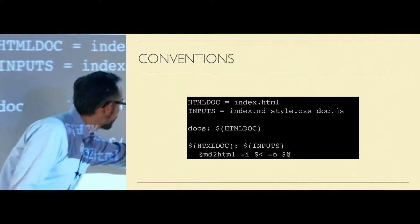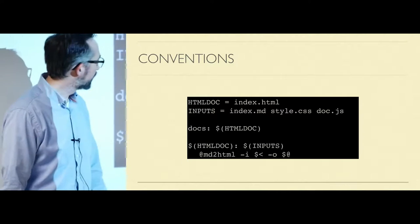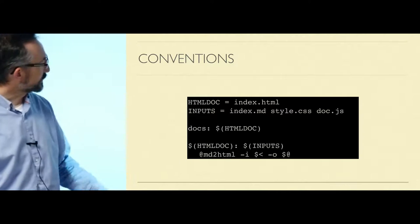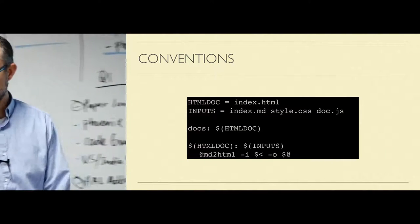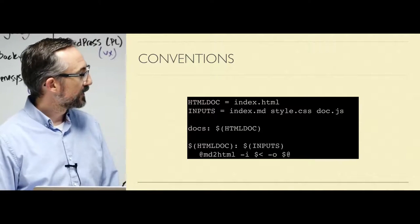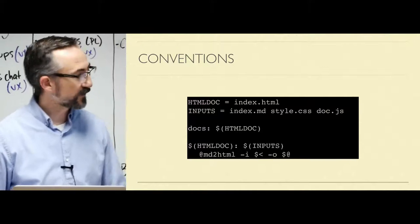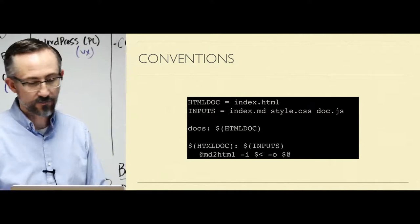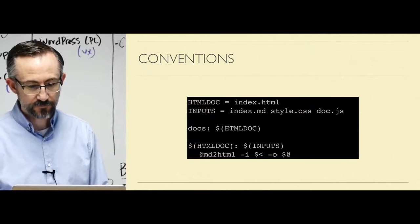Then you use funky stuff like this — this is the first dependency, and then this is the name of the target here. You eliminate all kinds of redundancy using those, and it makes the recipes portable. But it does make them harder to read if you're not familiar with those.